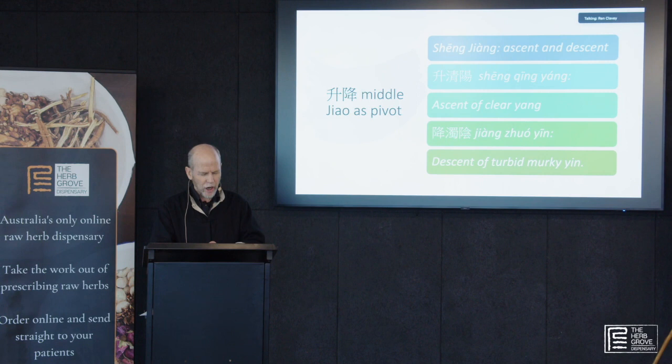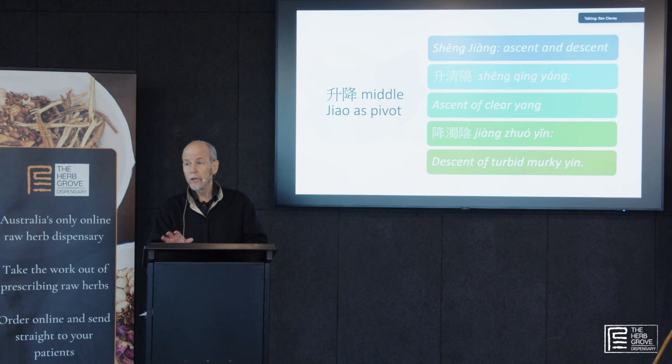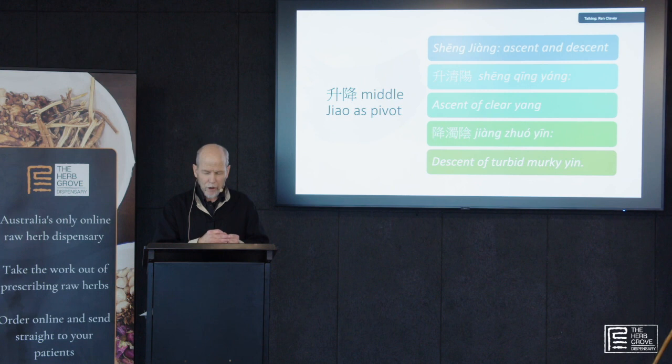Liu Duzhou — the Shang Han Lun expert — said, and I'm going to be using lots of his case histories today, Liu Duzhou is very well known and only died about 10 years ago. He said that Li Dongyuan liked to use Shang Jiang.